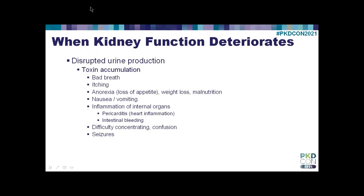As kidney function becomes disrupted and urine production is disrupted, you tend to accumulate waste products—toxins. There are a variety of toxins, many of which aren't very well characterized. They can cause bad breath, itching, loss of appetite leading to weight loss and malnutrition, and ultimately nausea and vomiting. If we don't intervene, they can cause inflammation of internal organs such as the heart, which causes pericarditis. They can cause intestinal bleeding, disrupted brain function with difficulty concentrating and confusion, and then if it becomes very severe, seizures. We tend to intervene before these more serious consequences happen.